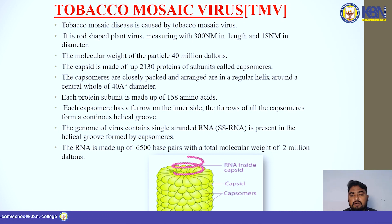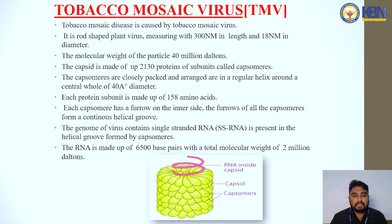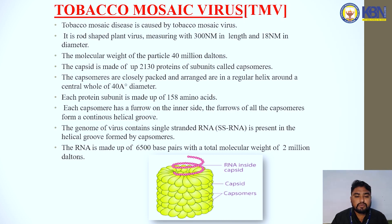The capsomeres are closely packed and arranged in a regular helix around a central hole of 40 angstrom diameter. Each protein subunit is made up of 158 amino acids. Each capsomere has a furrow on the inner side. The furrows of all the capsomeres form a continuous helical groove.